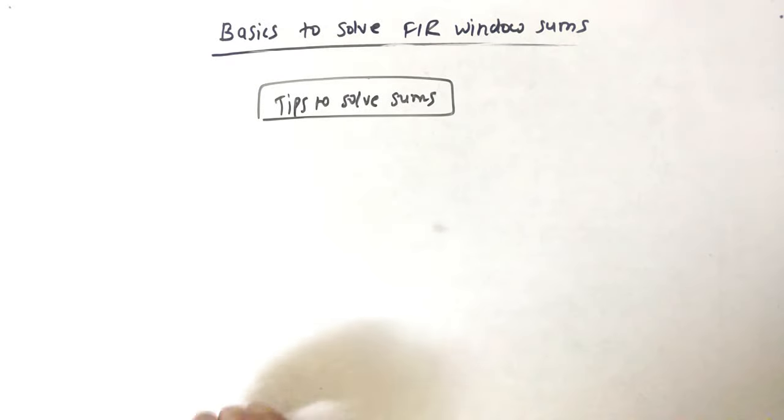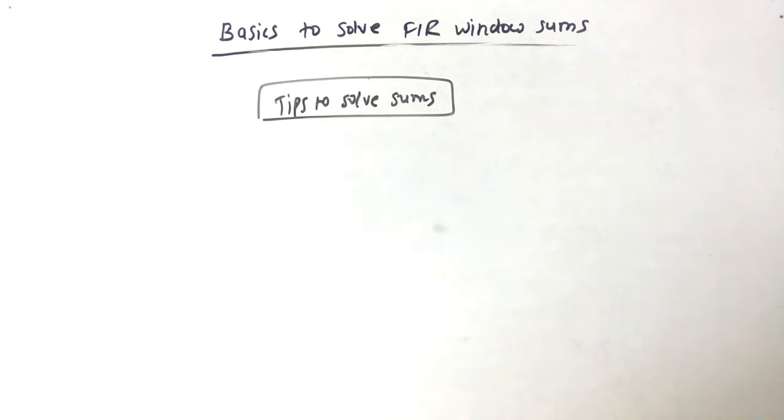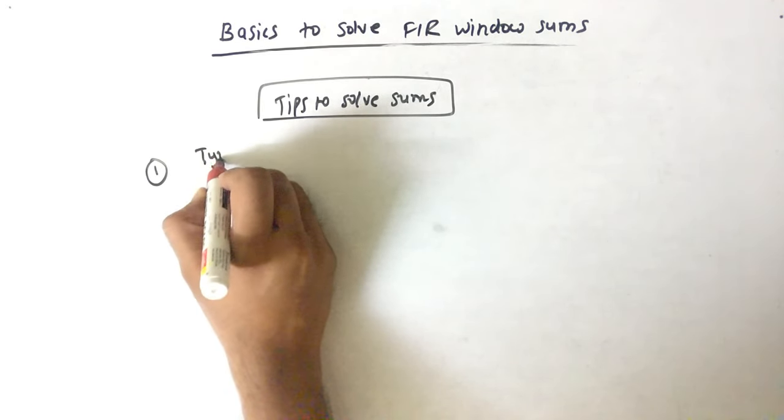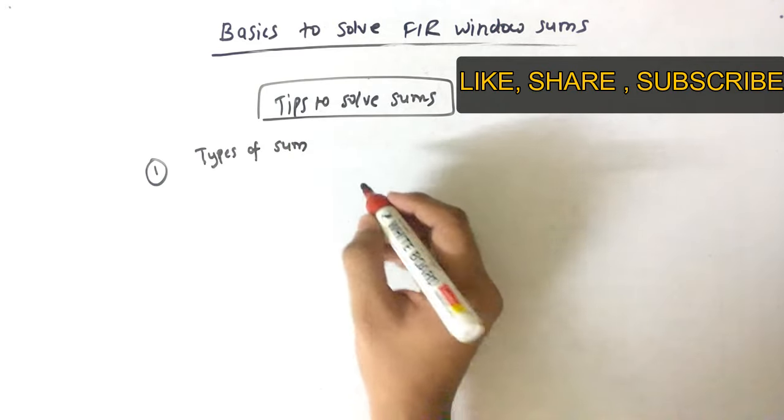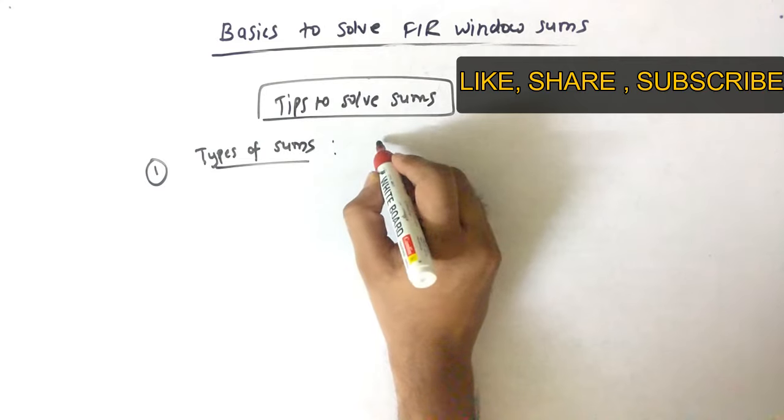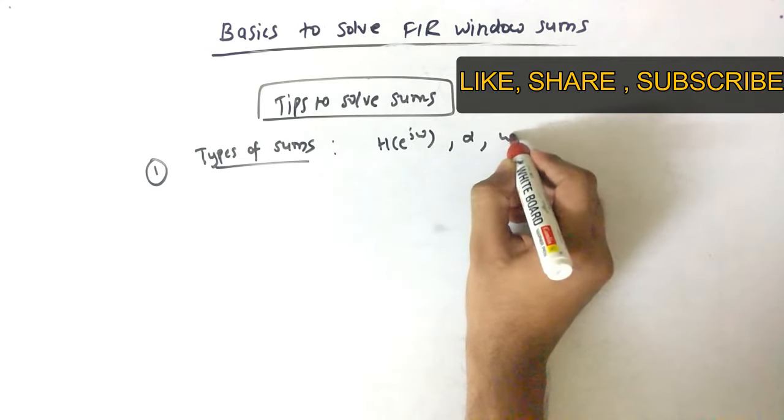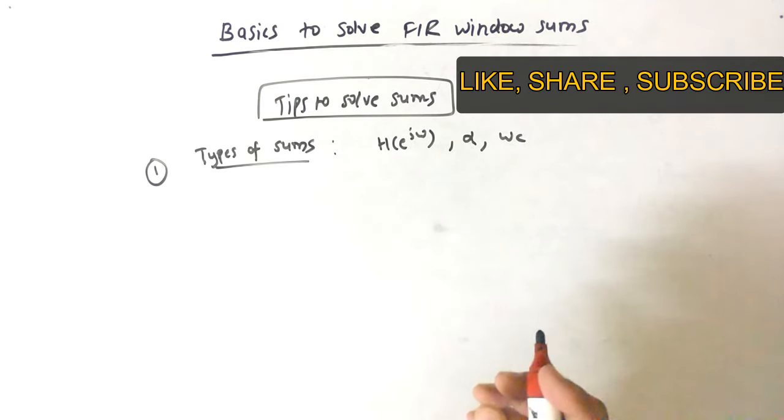After knowing the basics, the very important term that you should know is tips to solve sums. First you should understand what are the types of sums that I will show in my future videos. What happens is basically H of E raised to J Omega, Alpha and Omega C. These 3 terms are asked in different ways that you should know.